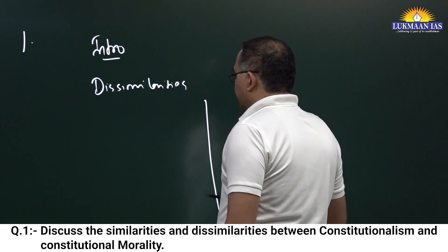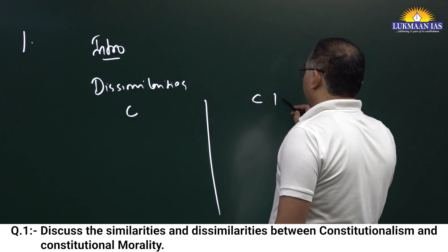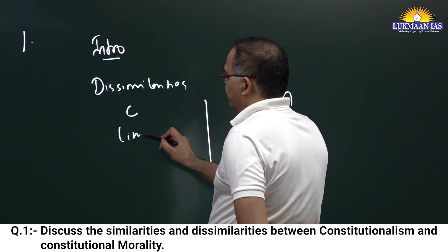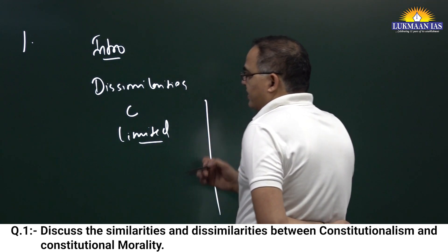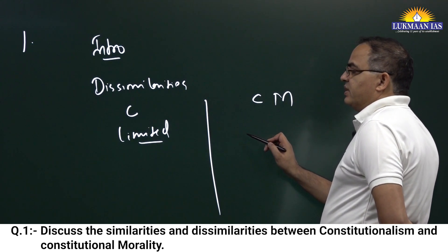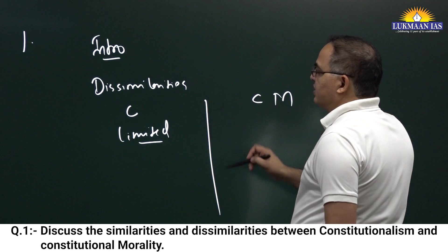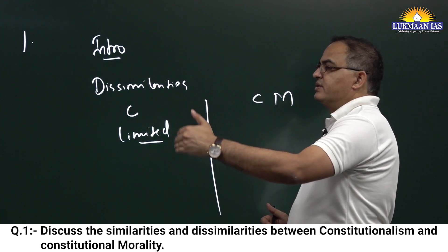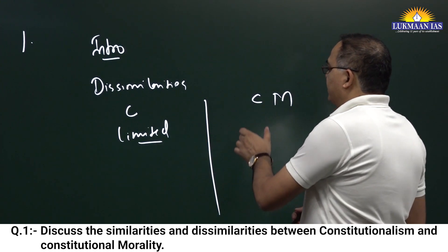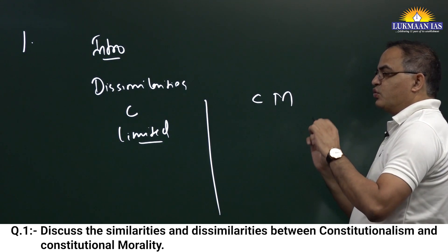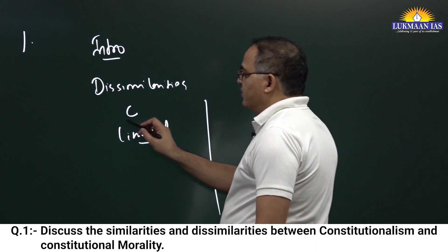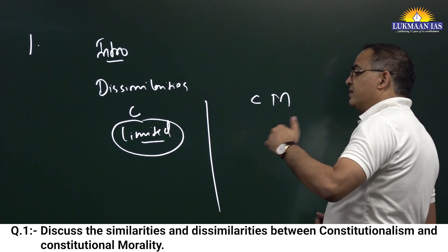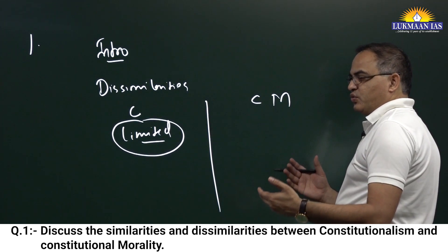The dissimilarity between constitutionalism and constitutional morality: the main difference is that constitutionalism is about limited government — it limits the power. Both should have reverence to the constitution, but constitutional morality represents the morality of the people who govern. Constitutional morality is about respect and reverence to the ideals of the constitution.